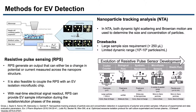Resistive pulse sensing generates an output that can either be a change in potential or current measured across the nanoparticle structure. It is also feasible to couple the RPS with an EV isolation chip. With the real-time electrical signal readout, RPS can provide EV sample information during the isolation and elution phases of the assay.